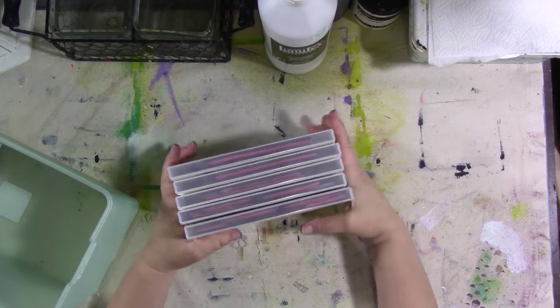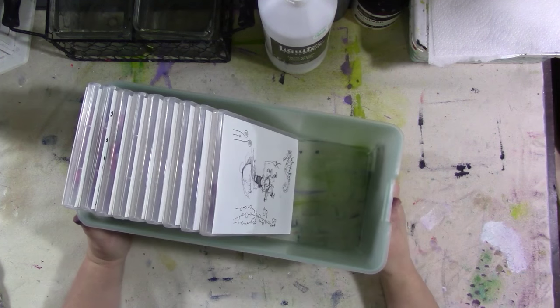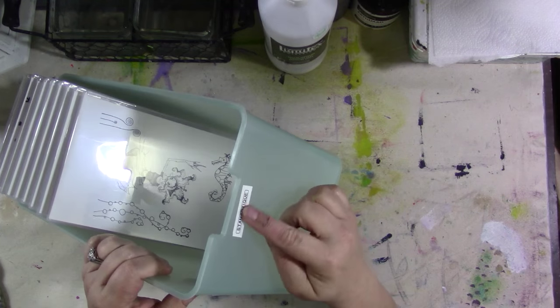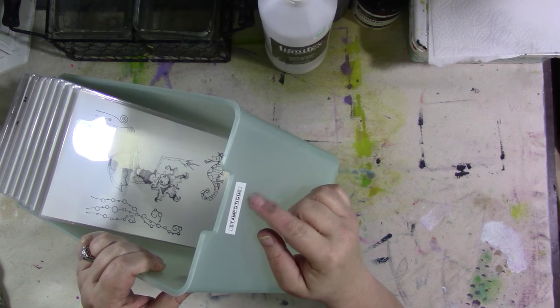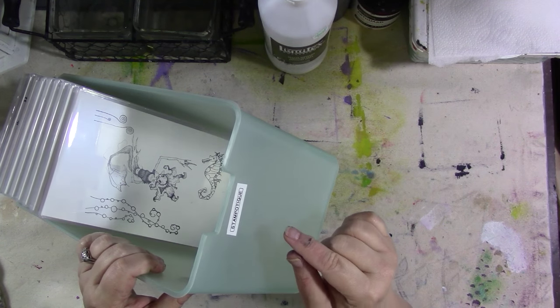And then just like with my other stamps, they get put into one of these quarter bins from Target. These are $4.99. And on the outside, I always label which brands, manufacturers, or types of stamps are in the box.